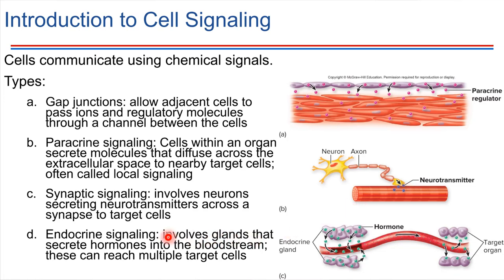The last general signaling mechanism is endocrine signaling. Endocrine means this involves the bloodstream. Something gets produced and secreted from a gland into the bloodstream — that thing is called a hormone, which is just a messenger molecule that travels through the blood. Since it travels through the bloodstream, it can reach a number of different target cells throughout the body. That's endocrine signaling.